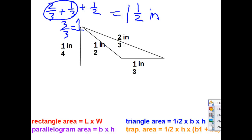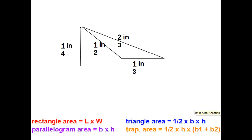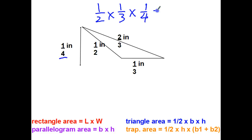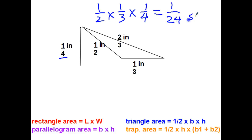For the area of this triangle: one-half times the base — one-third — times the height — one-fourth. Top times top times top: one times one times one is one. Bottom: two times three is six, times four is twenty-four. The area is one twenty-fourth square inches.